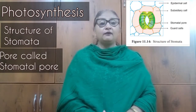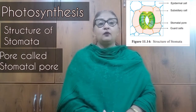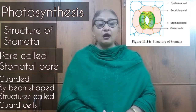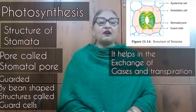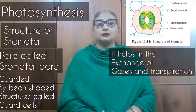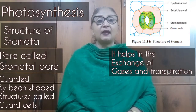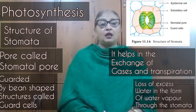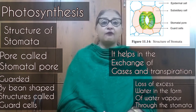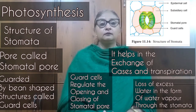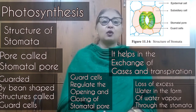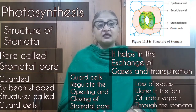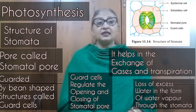Let us discuss the structure of a stomata. Stomata consists of a pore called the stomatal pore, which is guarded by bean-shaped structures called the guard cells. Stomata has two functions: exchange of gases and transpiration. Transpiration is the loss of excess amount of water in the form of water vapor through the stomata. The guard cells help to regulate the opening and closing of the stomatal pore.